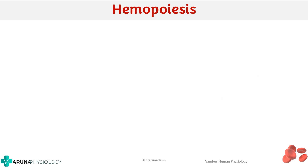Now we'll move on to the steps of erythropoiesis. Before knowing the individual steps, we have to understand hemopoiesis in general. Hemopoiesis includes not only RBCs but also all other cellular components of blood — like WBCs, granulocytes, and thrombocytes. The basic stem of development for all blood cells is: stem cells differentiate to form progenitor cells, which further differentiate to form precursor cells, and finally you have the mature cells.